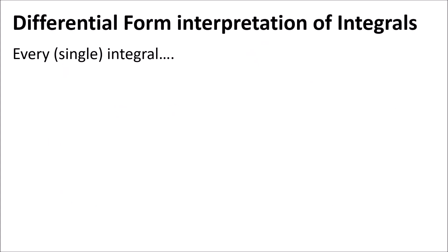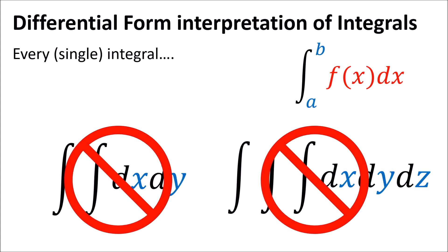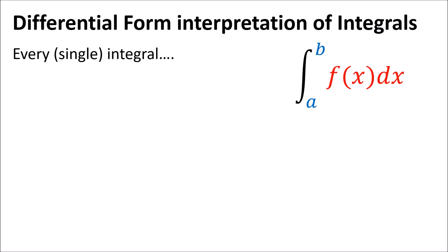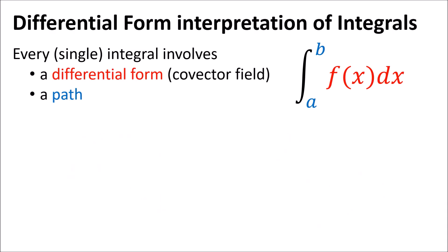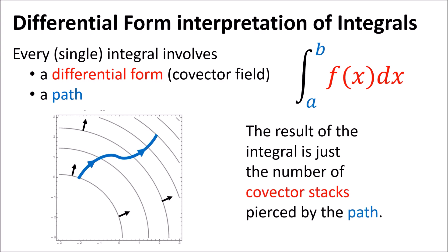The short answer is that every single integral — ignoring double and triple integrals here — involves a differential form and a path. The way we compute the integral is just by counting how many contour lines in the differential form that the path crosses.